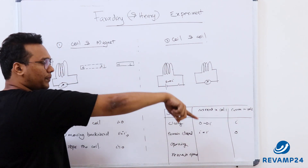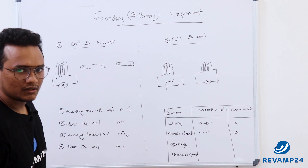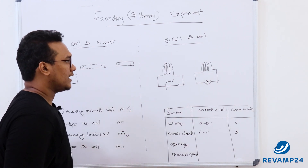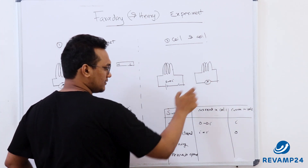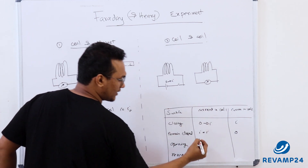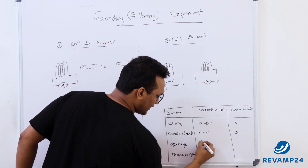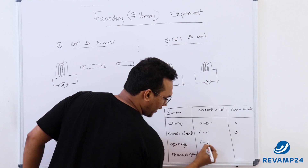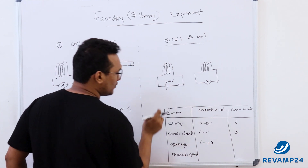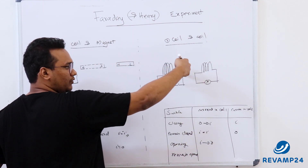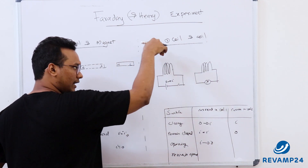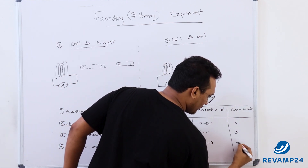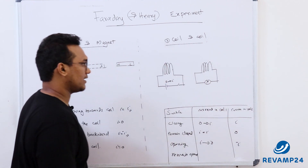Then he opened the circuit. The moment he opened it, he got a deflection again in the second coil. The change in the first circuit was that current decreased from i to 0. As the current decreased from i to 0, he got a current in the opposite direction in the second coil.